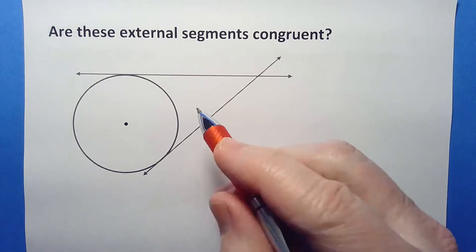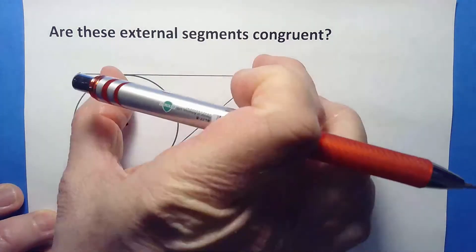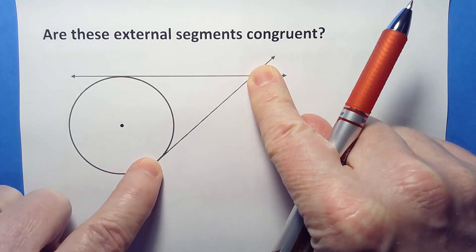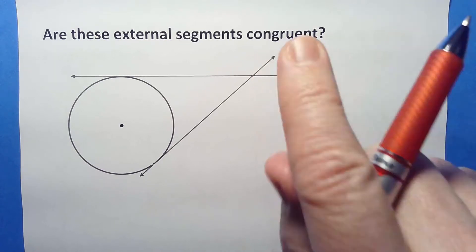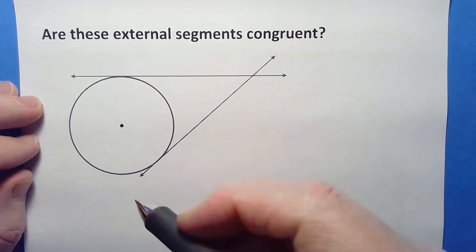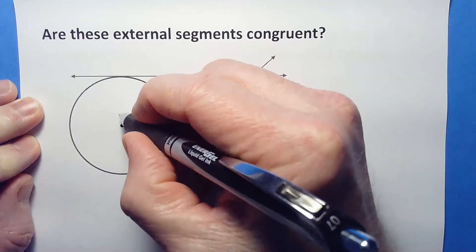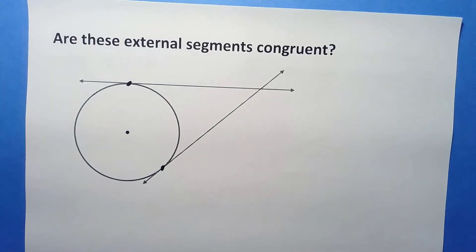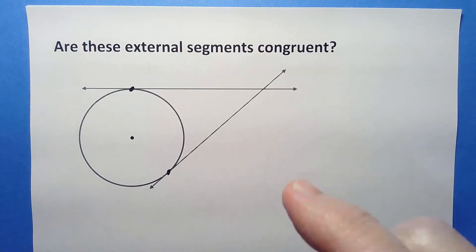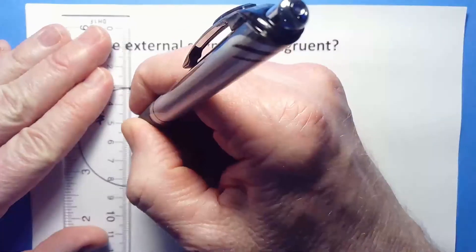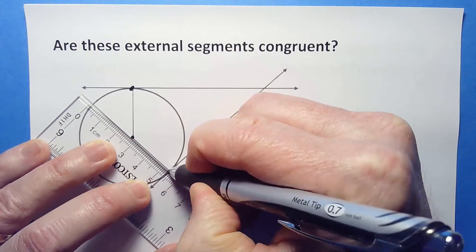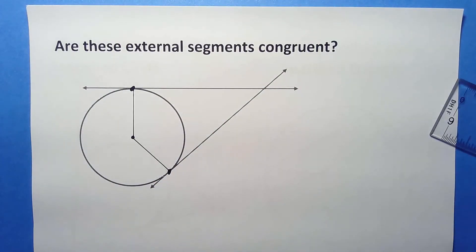When you have tangents touching a circle, they look like they might just be the same length — they might be congruent. Let's see if that's really true. I'm going to find the two points of tangency where the lines just touch the circle. Now I'm going to put in a radius to each point, and we're starting to see something that looks really symmetric. Symmetry is a powerful tool when proving congruence.